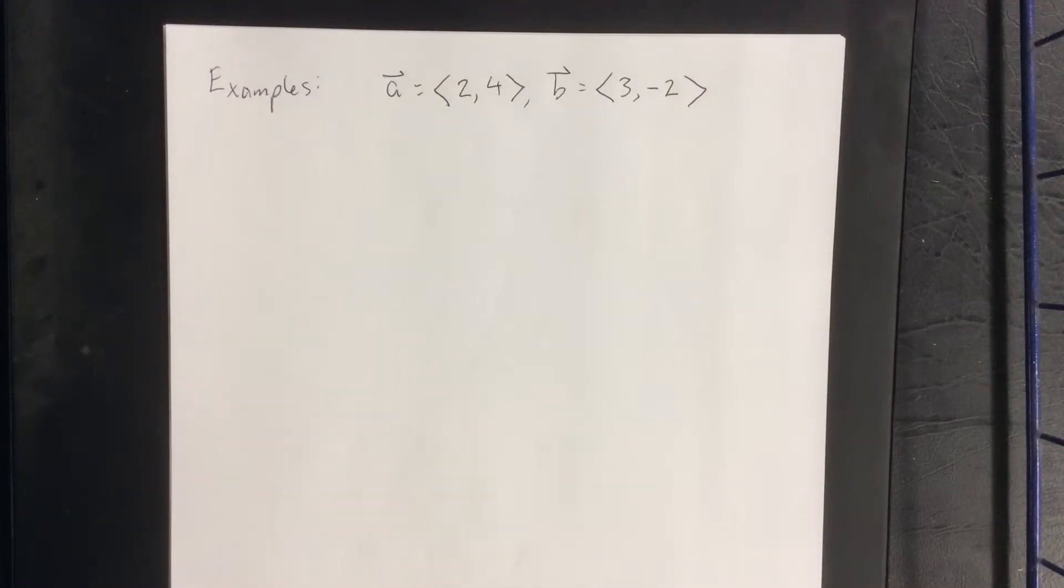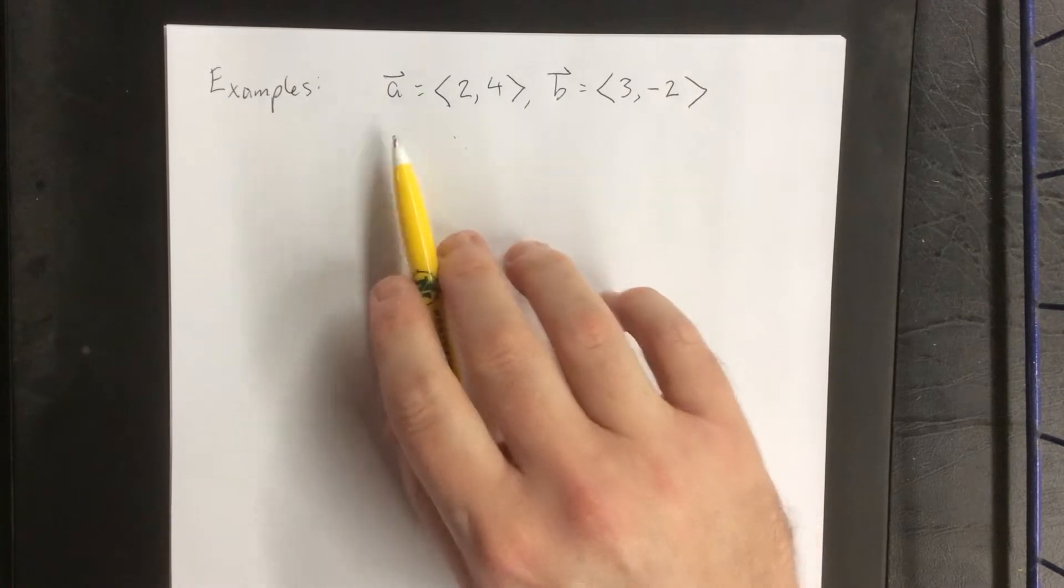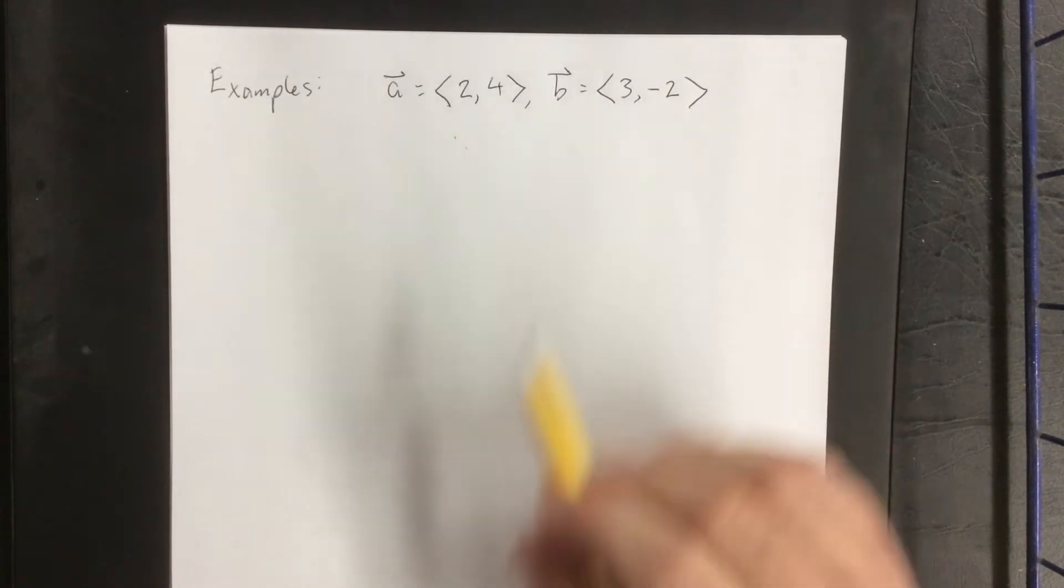For an example involving what we call linear combinations—that is, any combination of vector addition and scalar multiplication—let's consider the following two vectors. Vector A is the vector <2, 4>, and vector B is the vector <3, -2>.